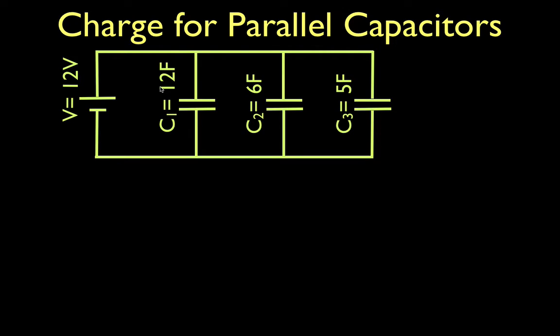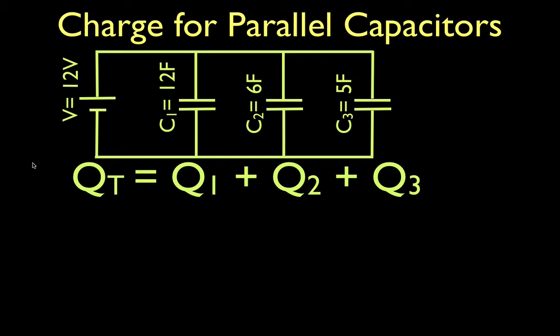Okay, and the way it works in the beginning here, it's pretty straightforward. We have 3 capacitors. They're each going to store some charge on them, and that means that the way it works for parallel capacitors is the total amount of charge is just the charge stored on number 1 plus the charge stored on number 2 plus the charge stored on number 3.